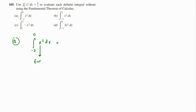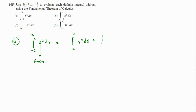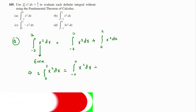x squared is an even function. So we can say that the integration from negative two to two is equal to the integration from negative two to zero plus the integration from zero to two. And since x squared is even, this is nothing but two times the integration from zero to two of x squared dx.